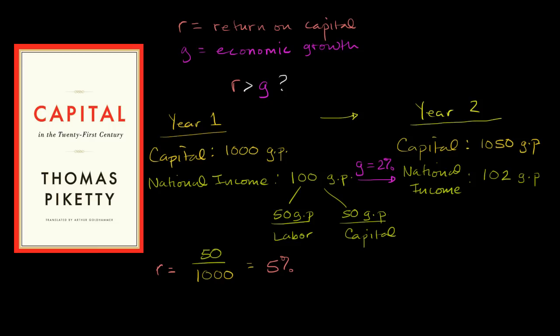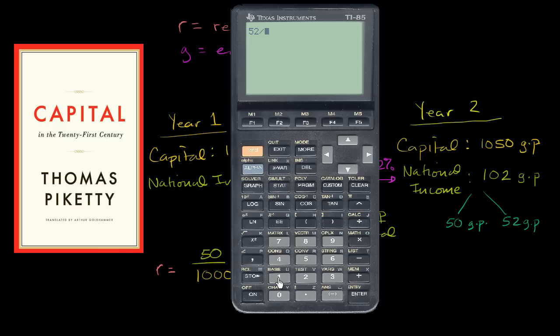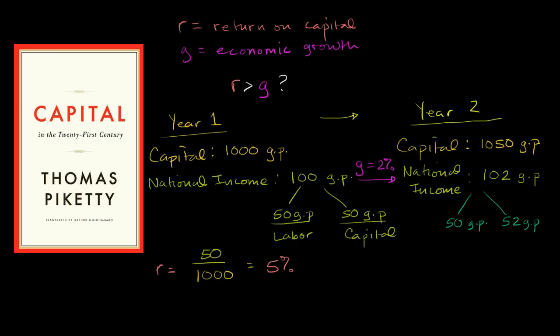Well, it actually depends how you break it down this year. So you could definitely have a situation where you have potentially growing inequality. For example, you could have a situation where labor still gets 50 gold pieces, while capital is getting 52 gold pieces. Now, the return on capital is going to be 52 divided by 1,050. The amount of income to capital is 52, the value of the capital is 1,050 gold pieces. And so, we have a return on capital of approximately 4.95%. So, in this scenario, R is greater than G, and inequality seems to be getting a little bit more. The owners of the capital are getting more of the income, a larger percentage.